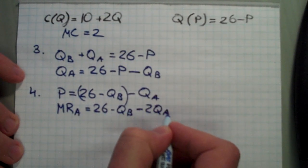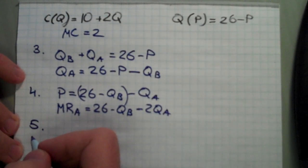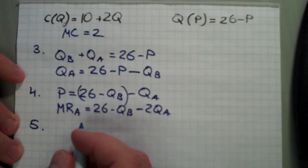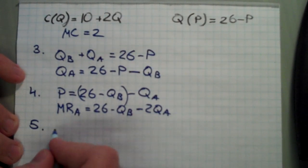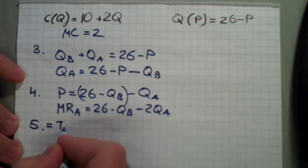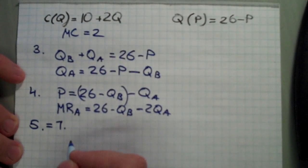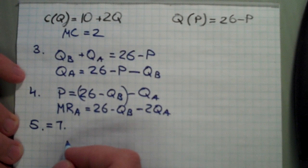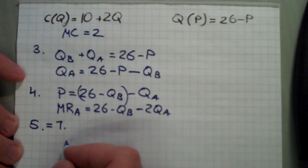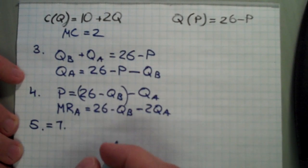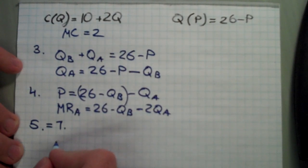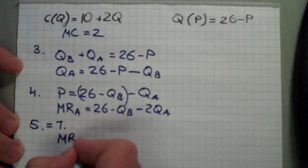That's the answer to question number four. Question number five asks for firm A's quantity if firm B produces QB units. Question five is essentially the same as question seven — it's just asked differently. Question seven asks for the best response function, but question five asks for firm A's quantity given firm B's quantity, which is basically the definition of the best response function.